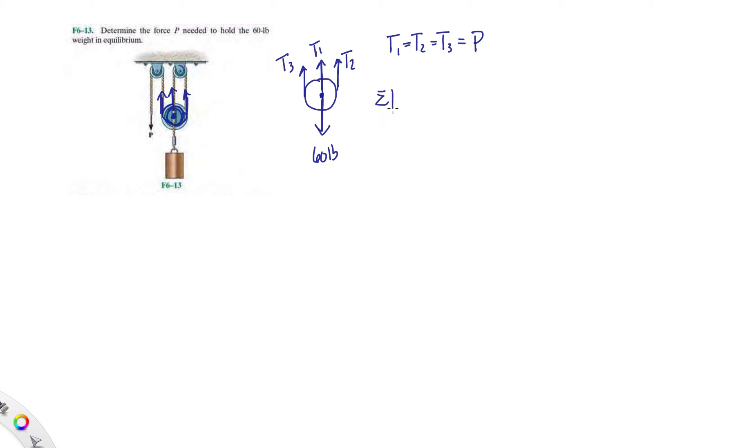Now we do summation of forces in the y direction. Let's do it the long way. T1 plus T2 plus T3 minus 60 equals 0. We know that this is P, this is P, this is P, so it's going to be 3P minus 60 equals 0, and then that means that 3P equals 60, and then P equals 20 pounds.